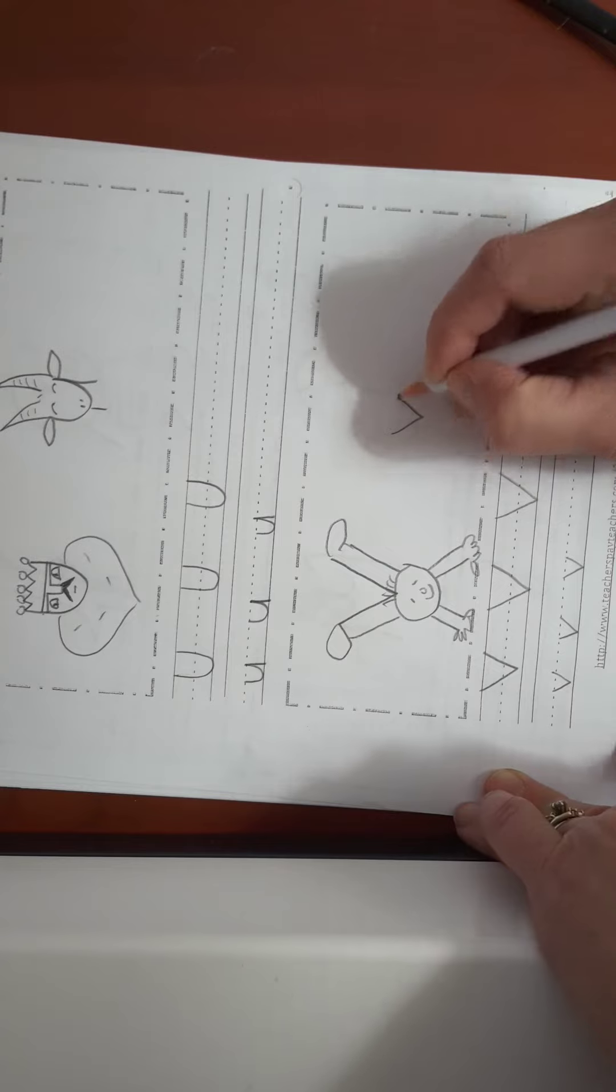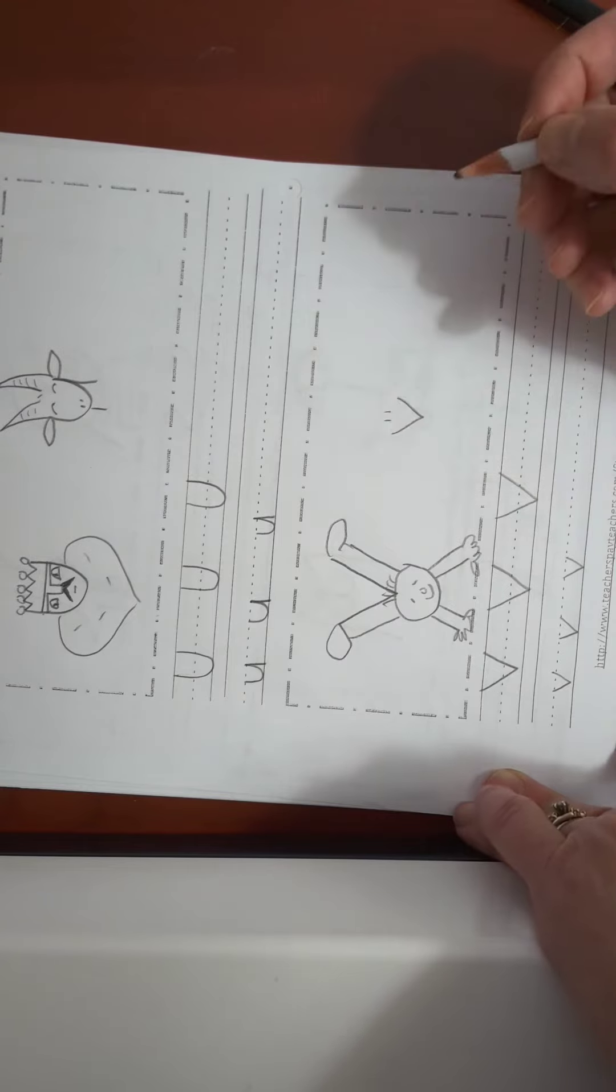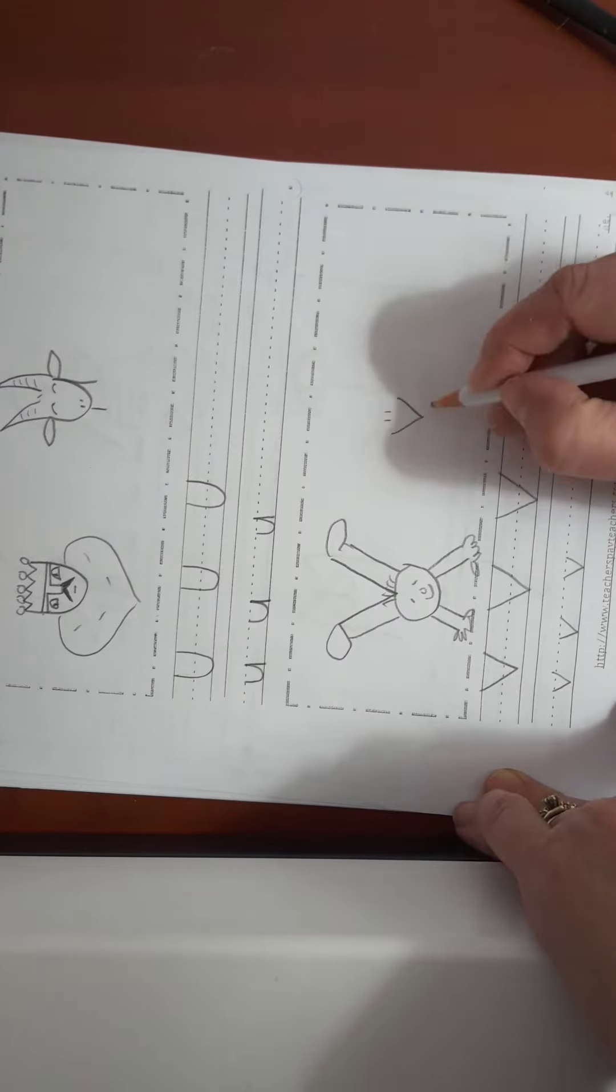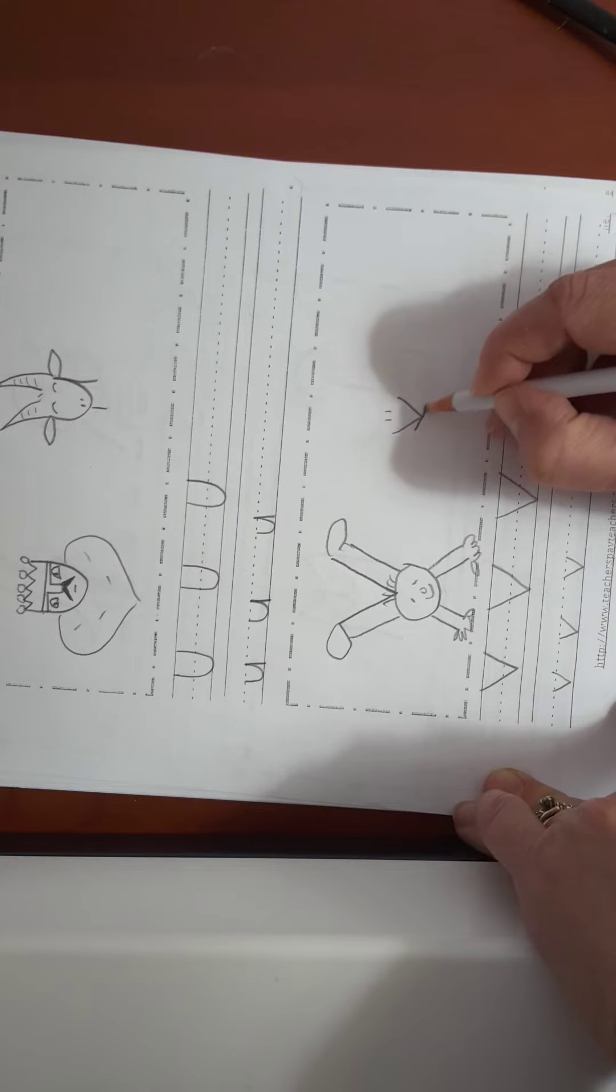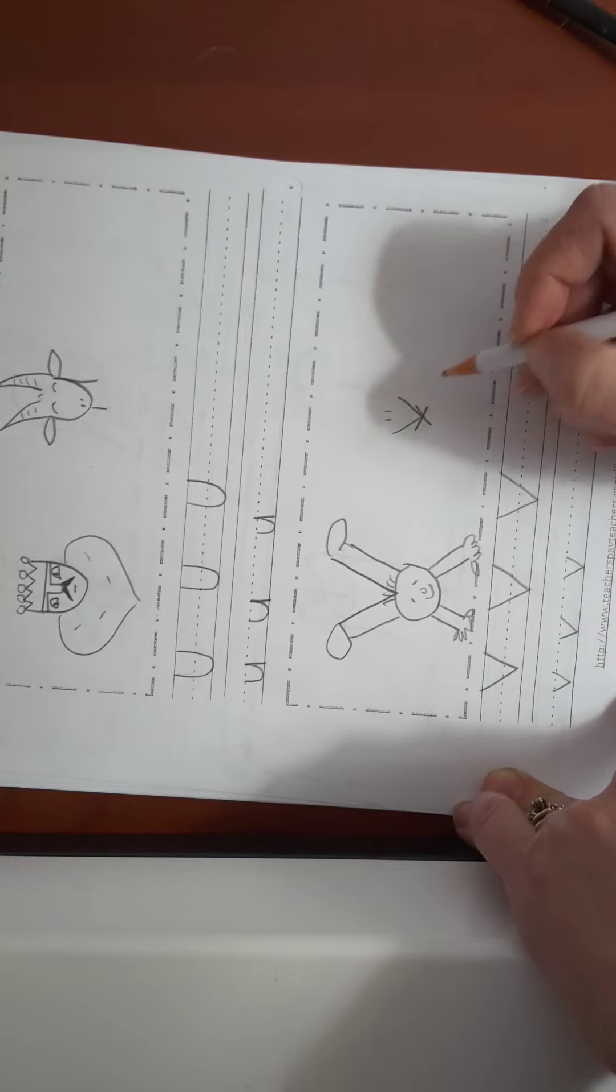Lowercase v. This is a little smaller. Put two lines right there. I want you to draw like an X right there. Almost done.